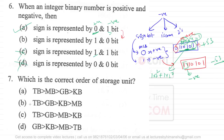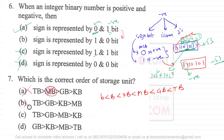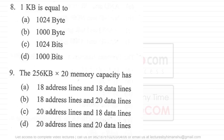Question seven asks for the correct order of storage units. We know: bit < byte < kilobyte < megabyte < gigabyte < terabyte. Option A is wrong because megabyte is not greater than gigabyte. Option B is wrong because kilobyte is not greater than megabyte. Option C is correct. Option D is wrong because megabyte is not greater than terabyte.